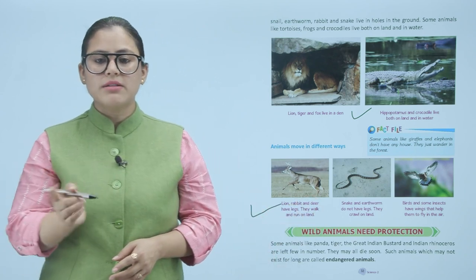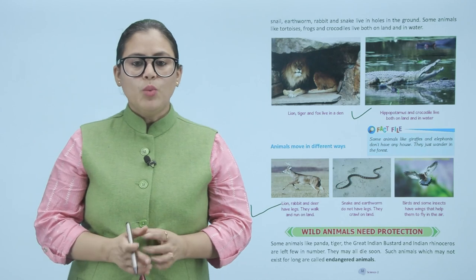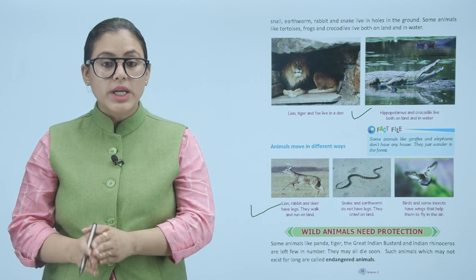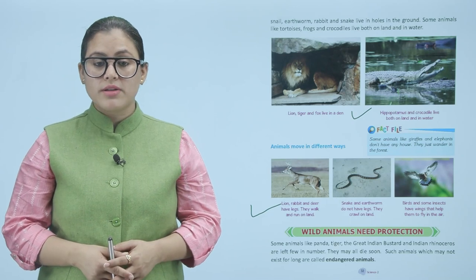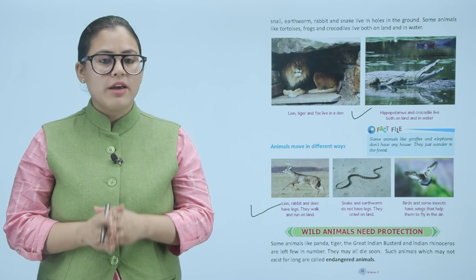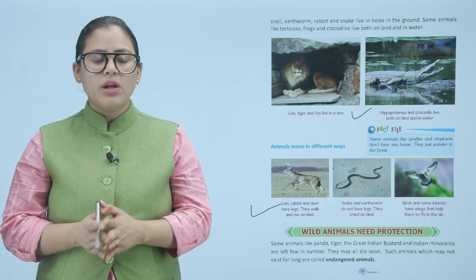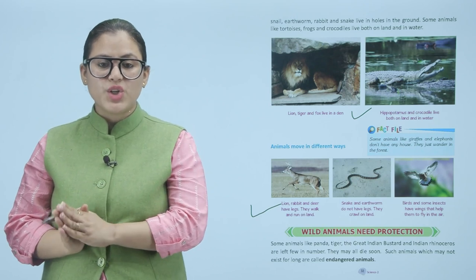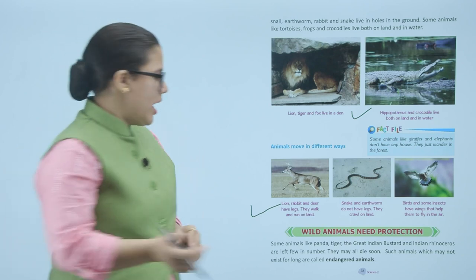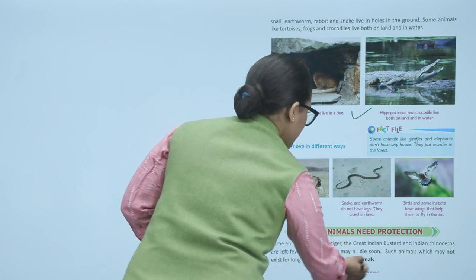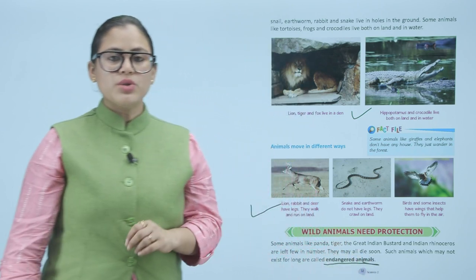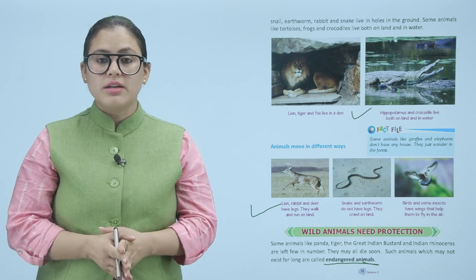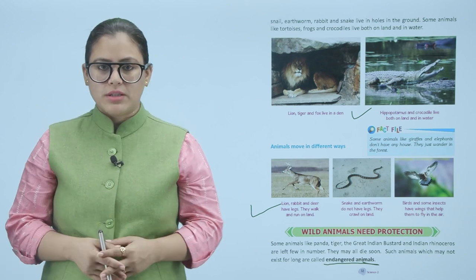Wild animals need protection. Some animals like the panther, tiger, the great Indian bustard, and the Indian rhinoceros are left few in number — they may all die. Animals which may not exist for long are called endangered animals. Endangered animals are those which, if not protected, could become extinct.